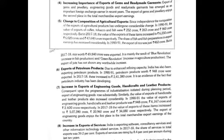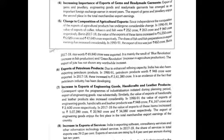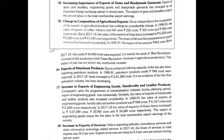The sixth point is the export of petroleum products. Due to enhanced refining capacity, India's petroleum product exports have grown significantly. In 1991, petroleum product exports were Rs. 948 crore, but by 2017-18 they increased to Rs. 2,41,380 crore. This is evidence of the fact that India's petroleum refining industry has been developing rapidly.